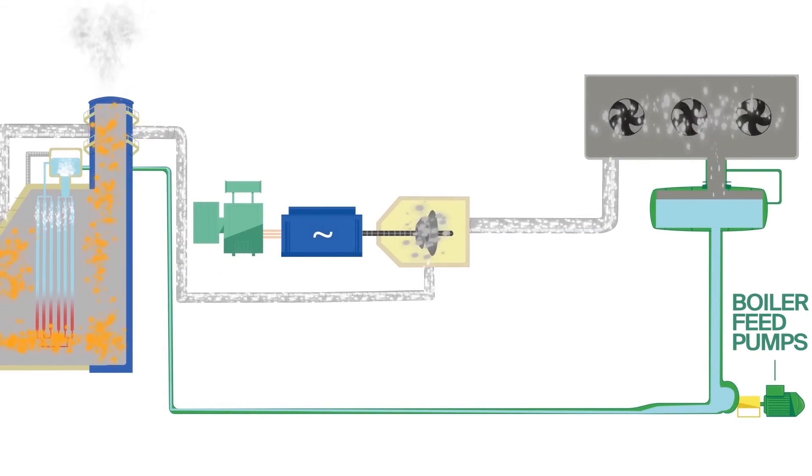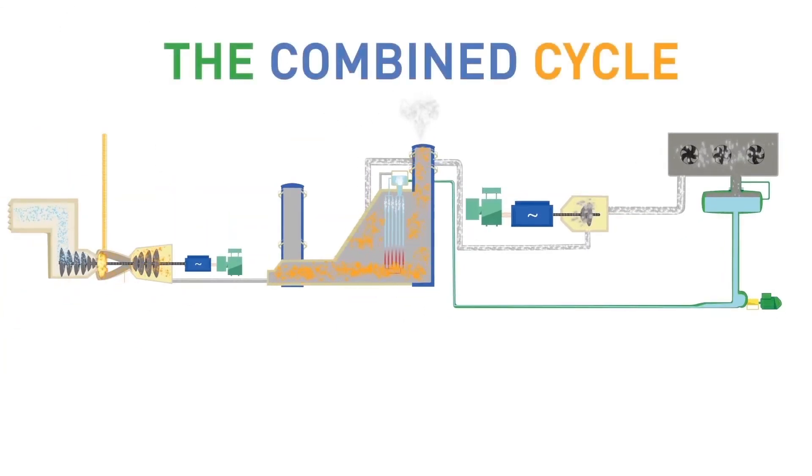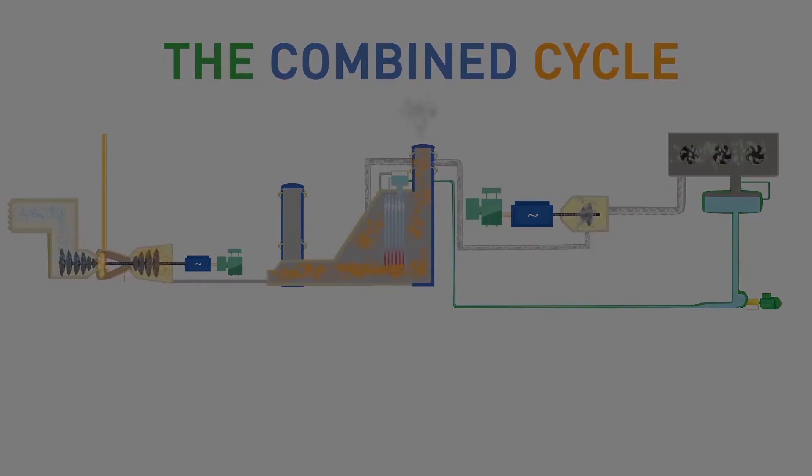This steam cycle is based on the Rankine cycle. The cohesive use of both the gas and steam turbine generators is known as combined cycle operations.